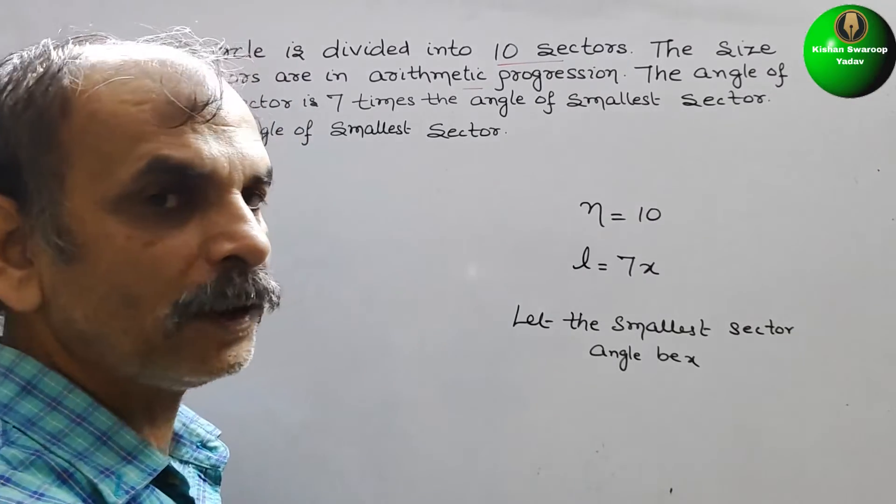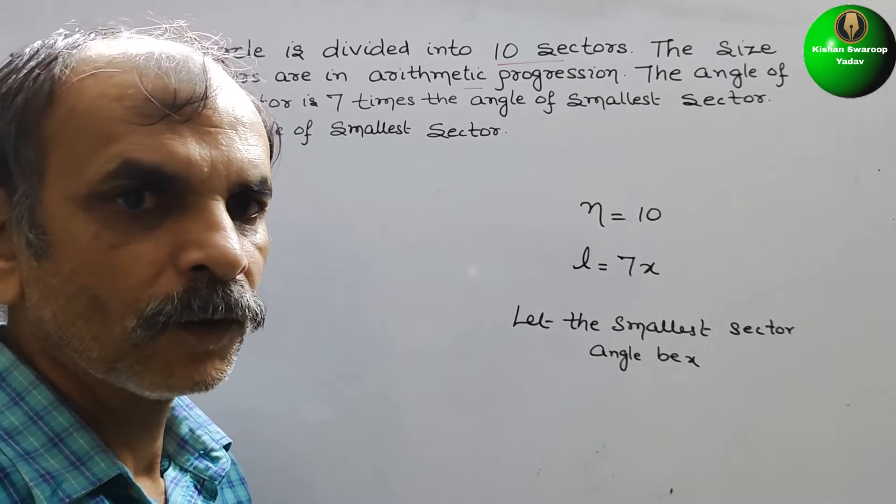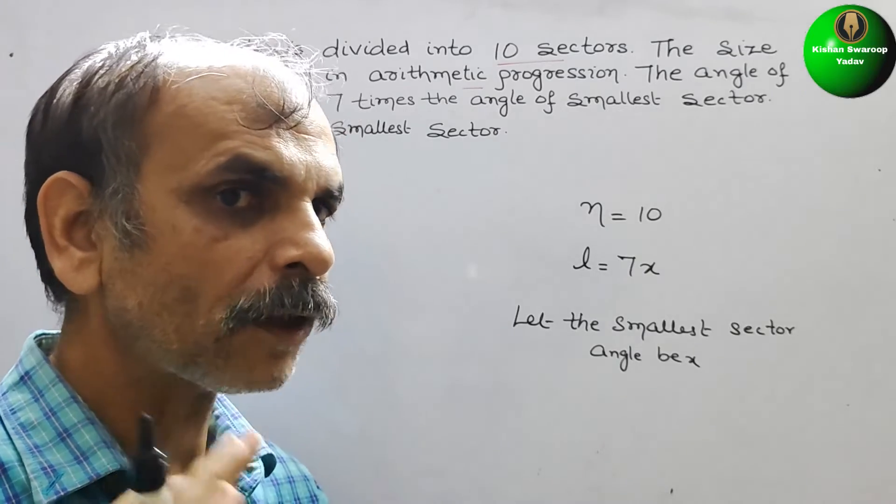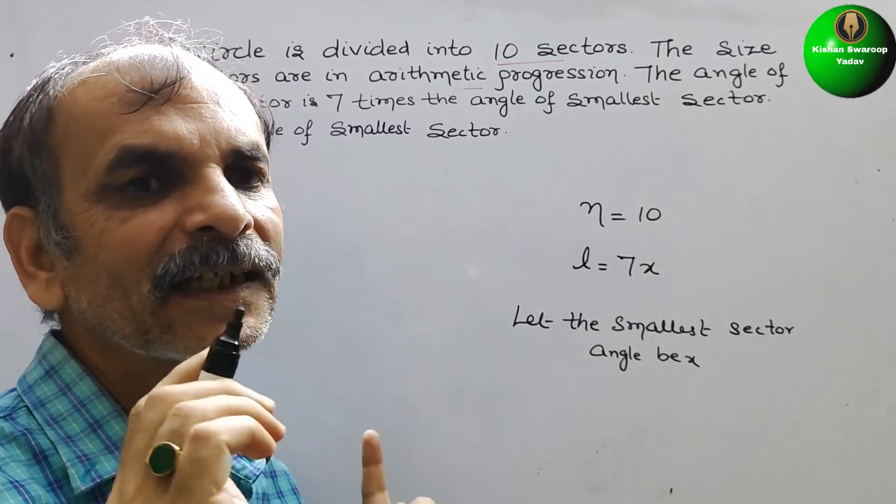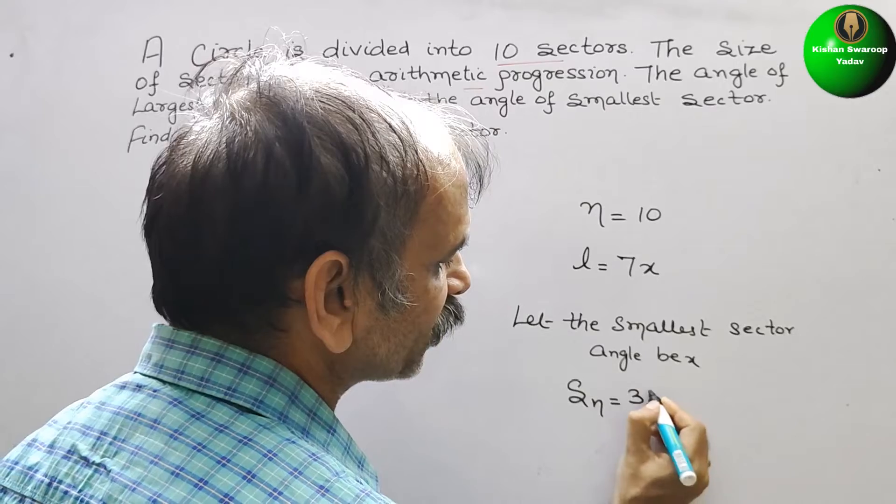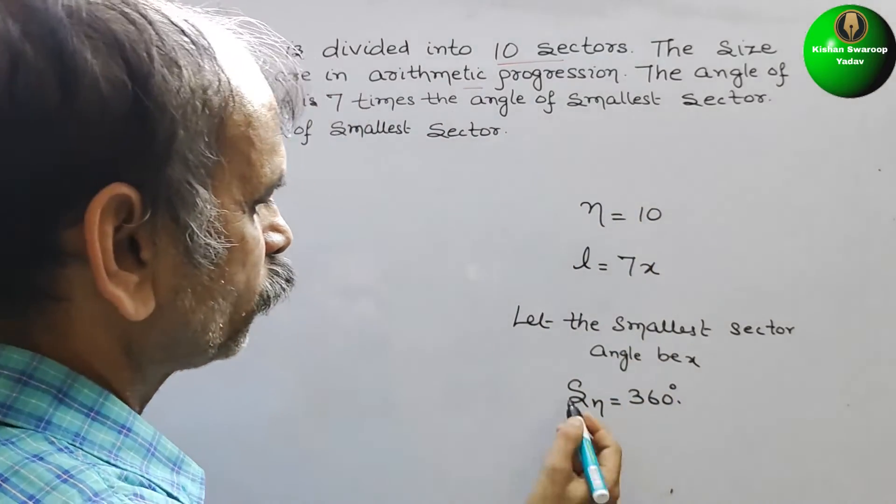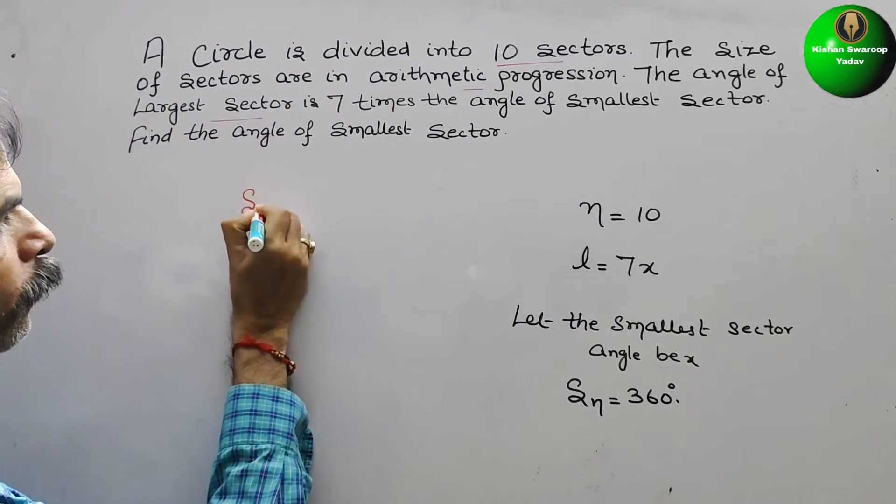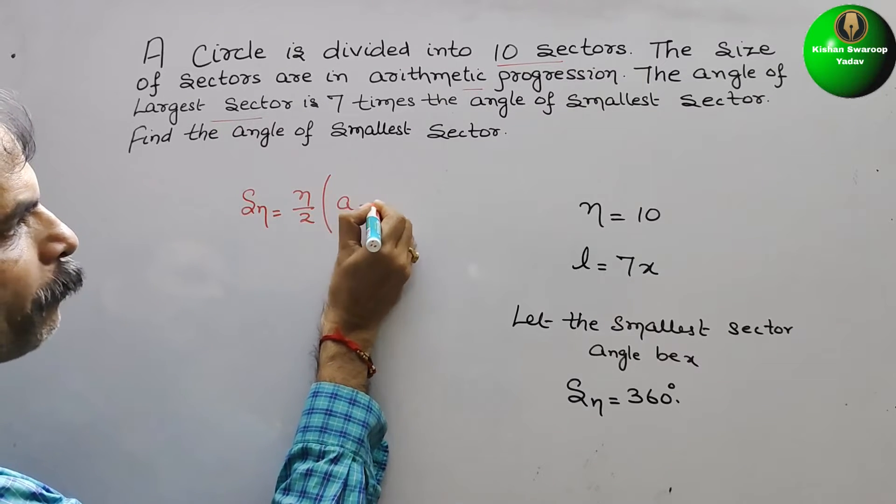Now we will go for the sum formula. We know that the total angle is 360 degrees in a circle. So now we can say Sn is equal to 360 degrees. Now substitute all these values. Sn formula: Sn is equal to n by 2, and here comes A plus L.